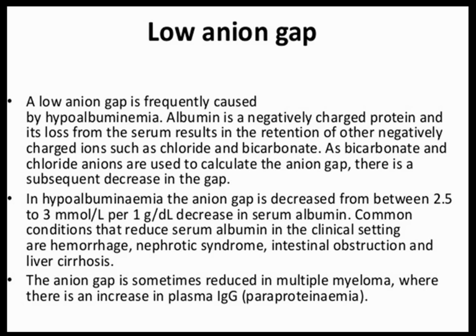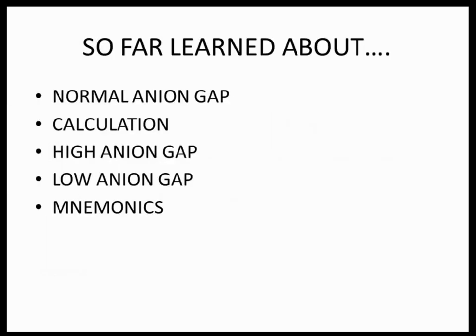In this five-minute lecture we have learned about normal anion gap and its calculation, causes of high anion gap, how to give albumin correction in metabolic acidosis with hypoalbuminemia, causes of low anion gap, and the relevant mnemonics. Thank you for watching. In the next lesson we will learn about the strong ion difference.